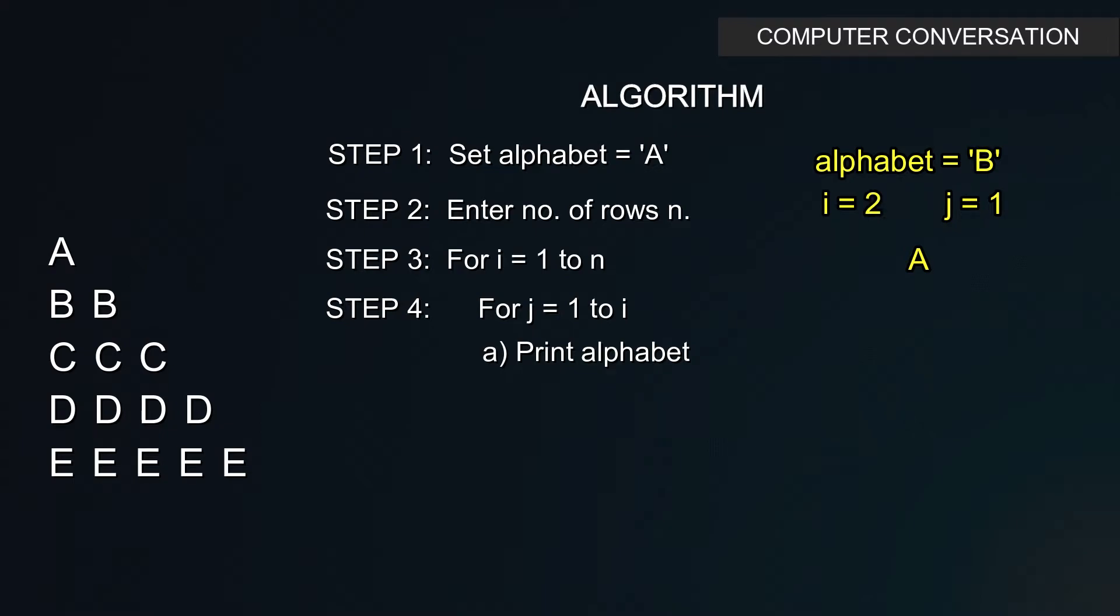The updated alphabet value that is B will be printed two times. Like this the i loop will run up to n times and the whole nested loop will complete printing the pattern. I hope you understood the thing.